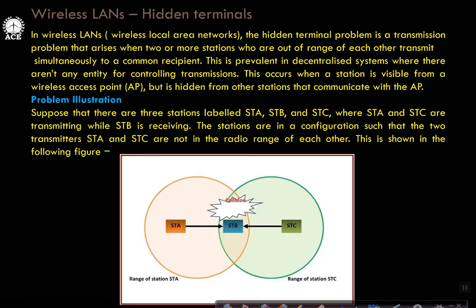The hidden terminal problem is a transmission problem that arises when two or more stations who are out of range of each other transmit simultaneously to a common recipient. This is prevalent in decentralized systems where there are not many entities for controlling transmissions. It occurs when a station is visible from a wireless access point but is hidden from other stations. When STA and STC transmit while STB is receiving, the two transmitters are not in radio range of each other, resulting in collision at STB.